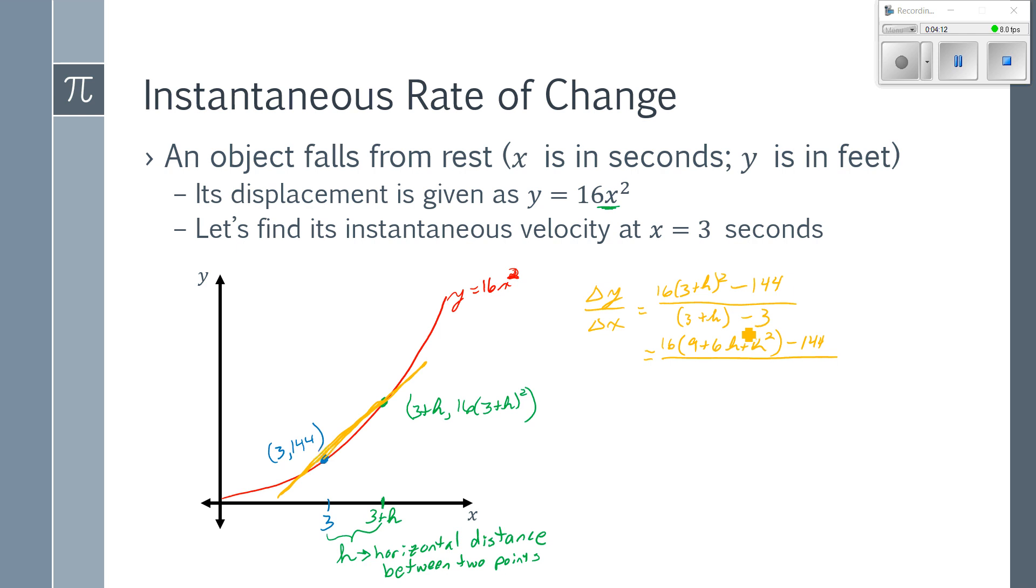3 plus h minus 3 is just going to be h. This gives me 144 plus 96h plus 16h squared minus 144 all over h. The 144's cancel, I have 96h plus 16h squared all over h. Well, because I have h's in both terms, I can actually divide the entire numerator by h. And I get 96 plus 16h.